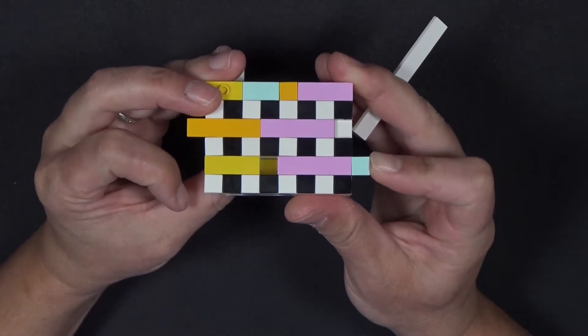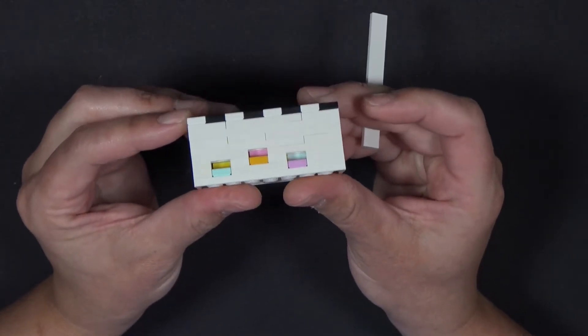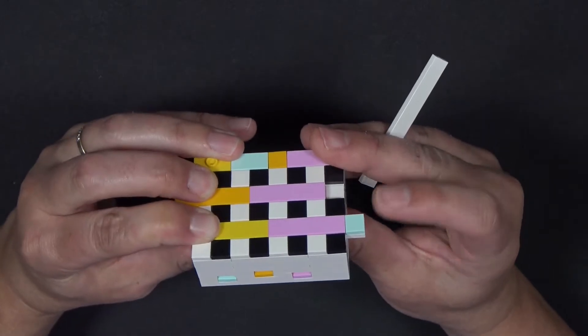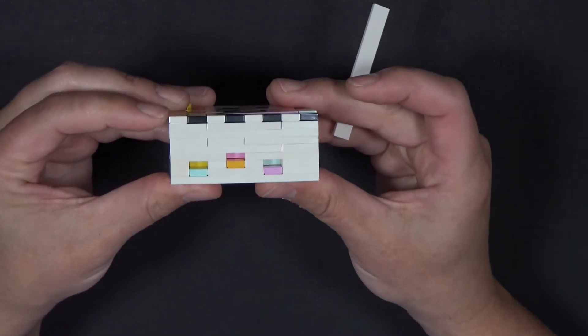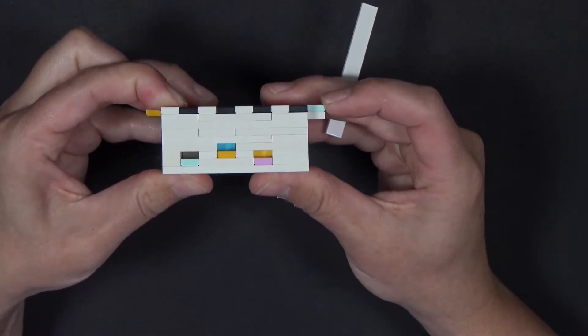I'm going to show you again. If I just slide the whole thing over like this, this is what it looks like. It's still blocked.